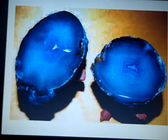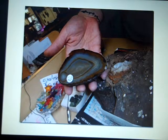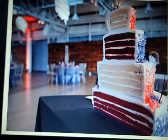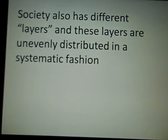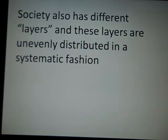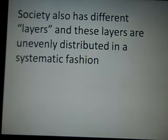You can see the different layers of the rock — this is a rock that has been cut in half. You can see the different layers there. And obviously a cake has different layers. So we see the different layers, and the same is true for society. A society has different layers and they are unevenly distributed, but in a systematic fashion. People at the top tend to get a little bit more, and people at the bottom tend to get a little bit less.